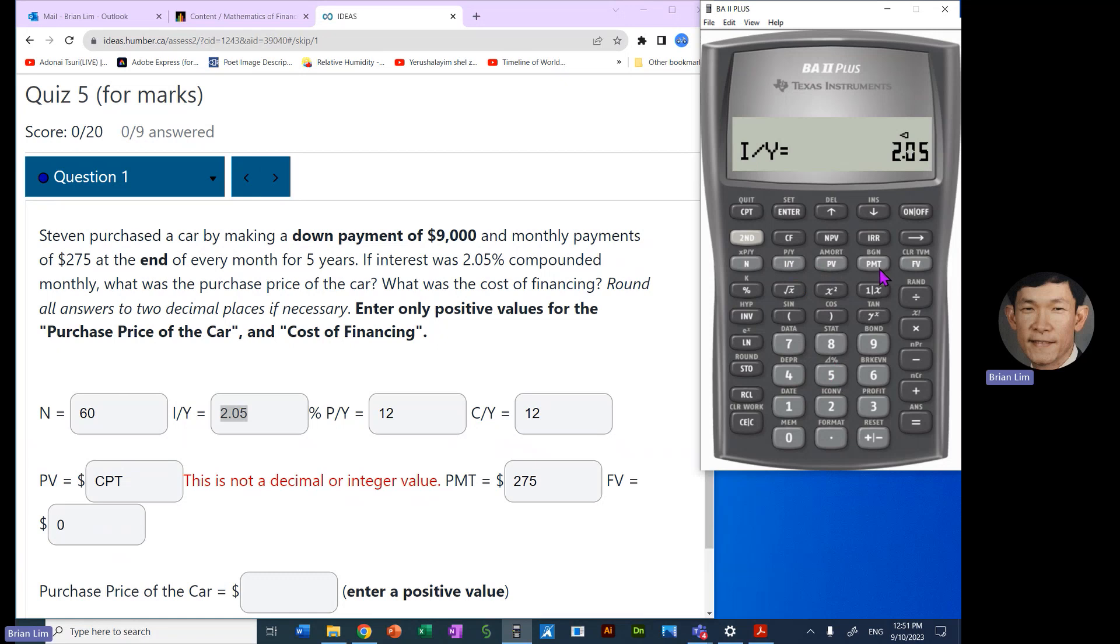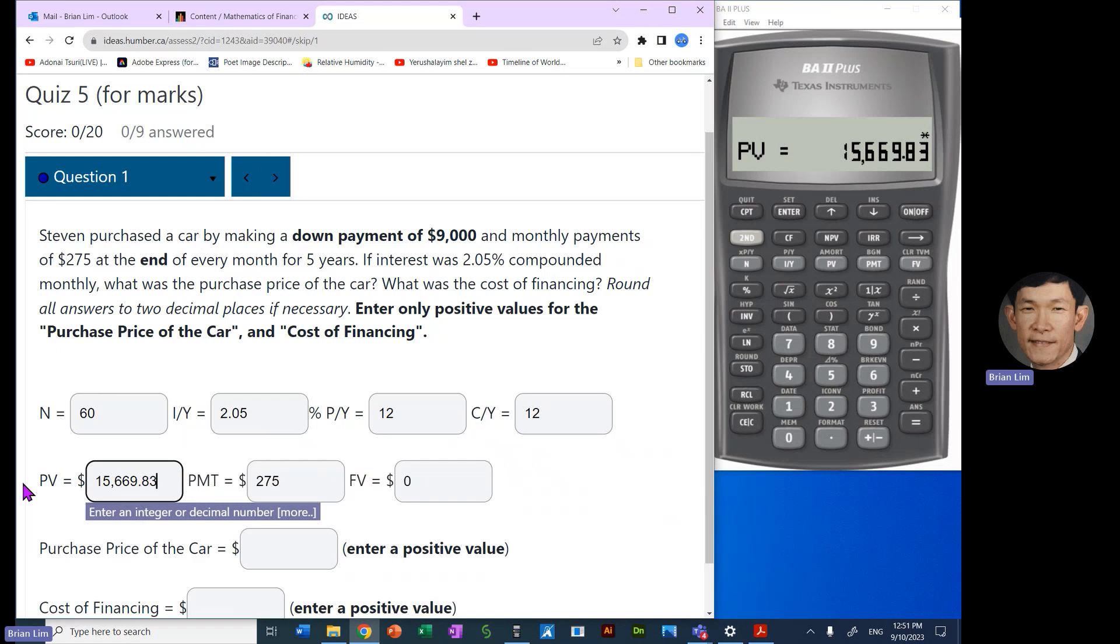Present value, we are computing that payment. We're making payments of $275. So we can put that in as negative, if you wish, or positive. It doesn't really matter. And zero for the future value because the car should be paid off. Now we compute the present value. The present value turns out to be $15,669.83.